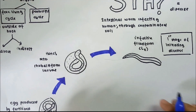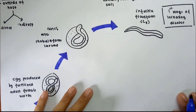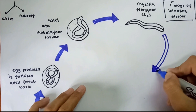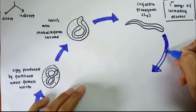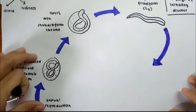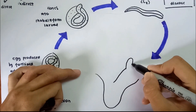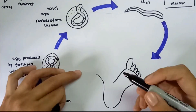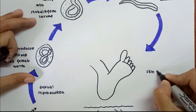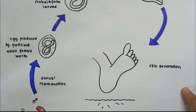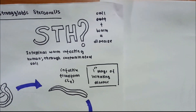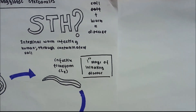How does the infective filariform stage cause infection in humans? The infection is characterized by the penetration of filariform larvae into the human host skin through direct contact with contaminated soil. This penetration can occur when someone with bare feet comes into contact with contaminated soil while doing activities such as playing football without wearing shoes.